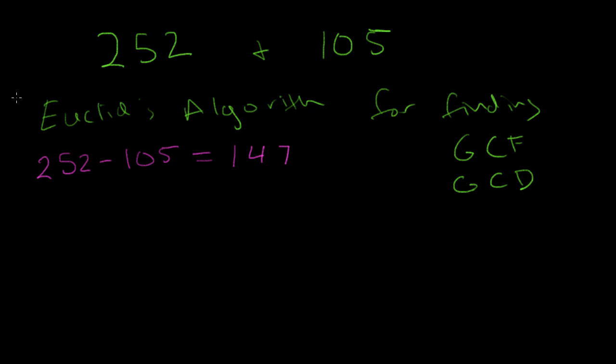Now the way you do Euclid's algorithm, that's the first step. You take the difference between them, which is the number we just found. Then you also find, of these two numbers on the left side, the one that is smaller. This is the one we want to use.